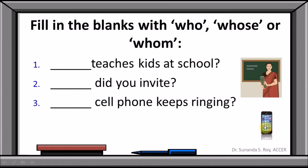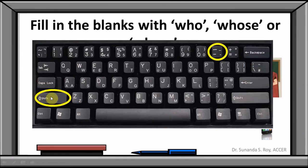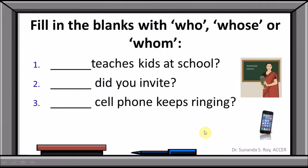You'll also see that I have inserted an image of a teacher to match with the first sentence, and a GIF of a mobile which keeps on ringing to match with the third sentence. In case you're wondering how I typed these dashes, all you need to do is press Shift and click the underscore key to get these blanks.